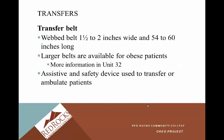The transfer belt is a webbed belt, one and a half to two inches wide and 54 to 60 inches long, so it can be cinched down to fit most patients. Larger belts are available for obese patients, discussed in Unit 32. It's an assistive and safety device used to transfer or ambulate patients. You don't want to be pulling on patients' joints or skin — that can cause skin tears or joint injury. The transfer belt gives you something sturdy to hold onto, and it's the safest way to transfer.